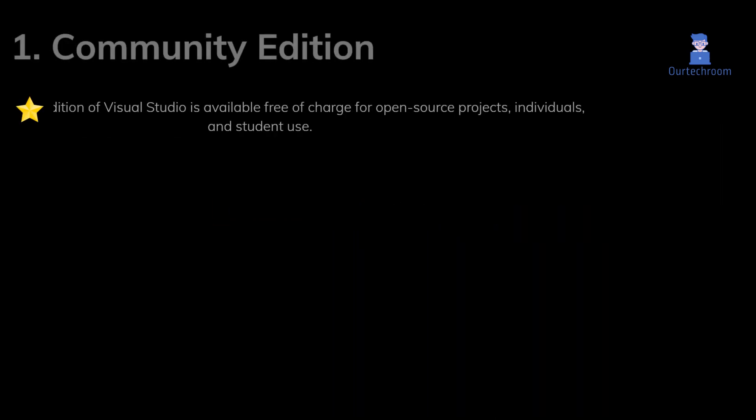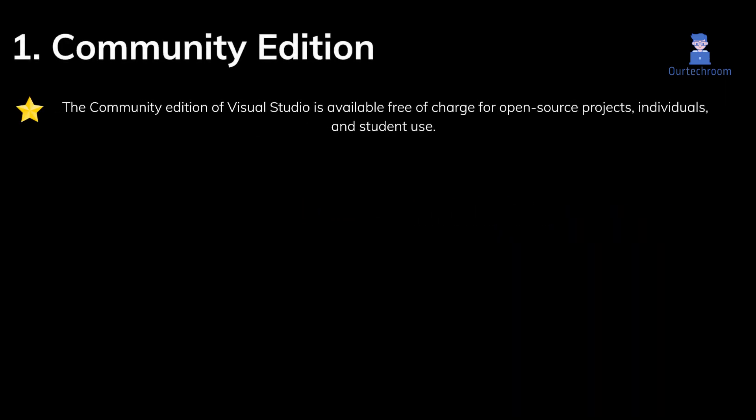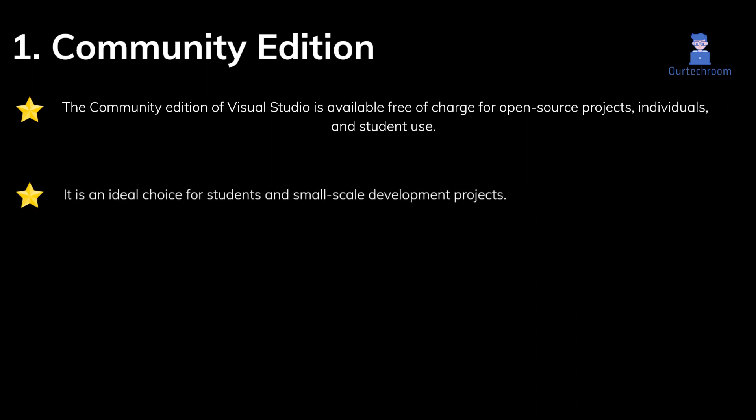Now let's look at their differences. 1. Community Edition. The Community Edition of Visual Studio is available free of charge for open source projects, individuals, and student use. It is an ideal choice for students and small-scale development projects. It is available for Windows, macOS, and Linux.